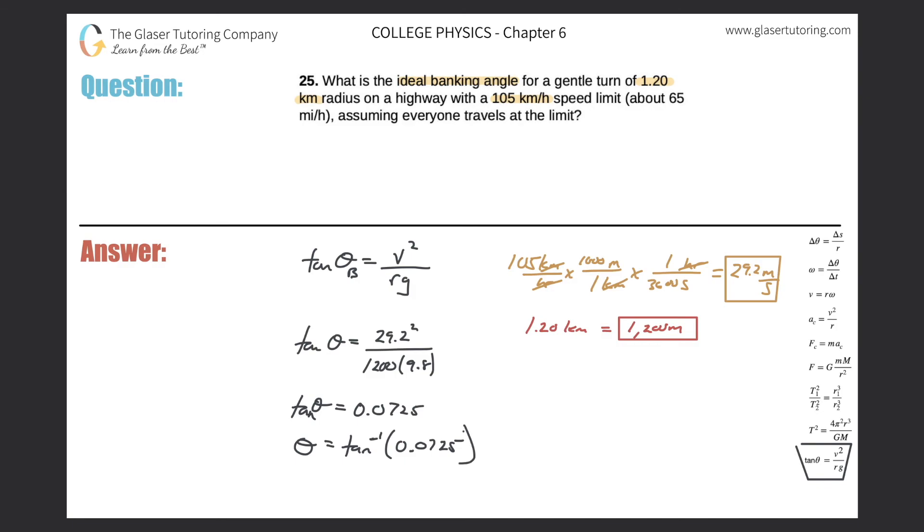Simply do second tangent, if that's how your calculator works—I'm using the TI-84—0.0725, and we get 4.14, 4.15, it looks like it's going to be 4.15 if I consider how to round. And that's in terms of degrees. So that is the ideal banking angle.